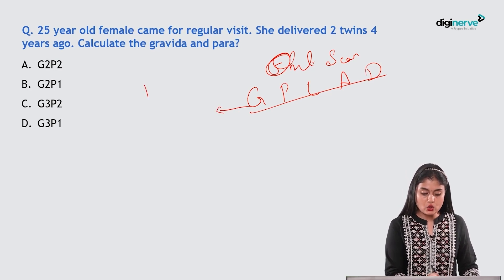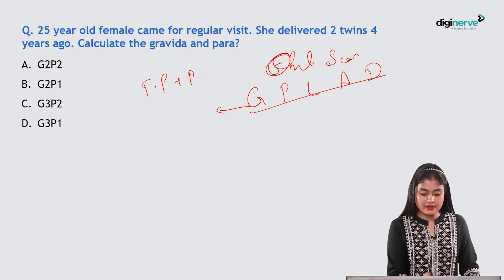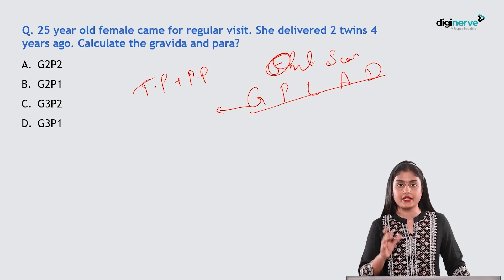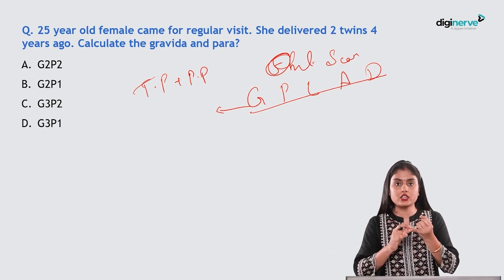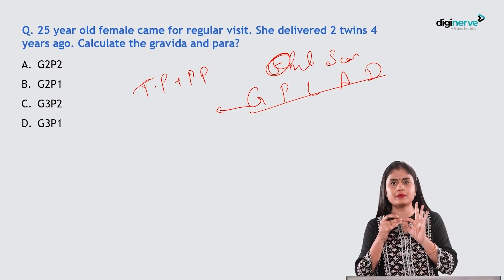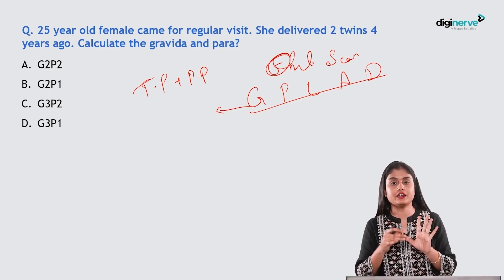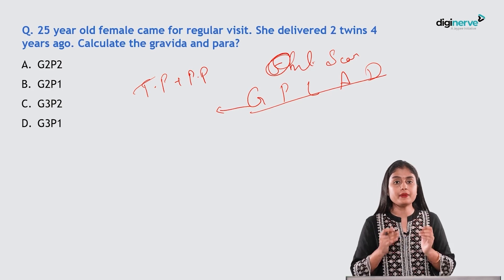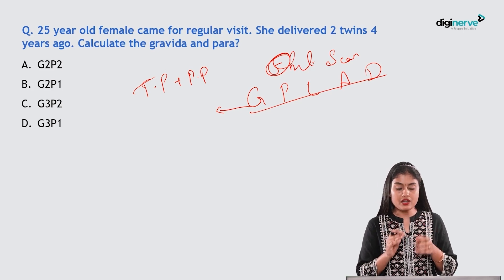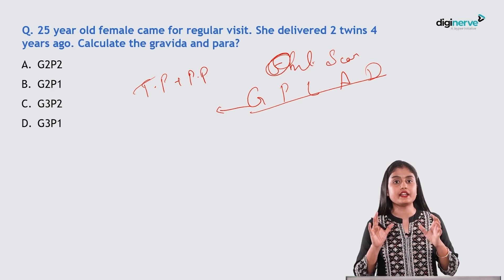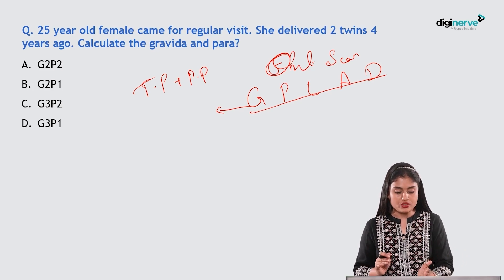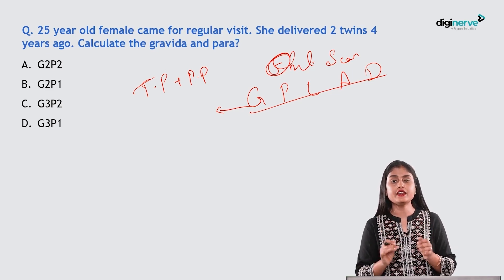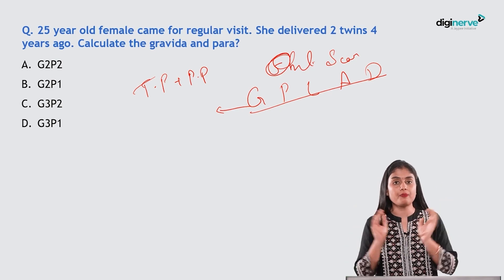Gravida is the total number of pregnancies including the present pregnancy, whatever the outcome — be it ectopic, abortion, mid-trimester miscarriage, or preterm delivery. Gravida is a term used for a pregnant lady only; if somebody is not pregnant, you remove gravida and just state para, living, and abortion.